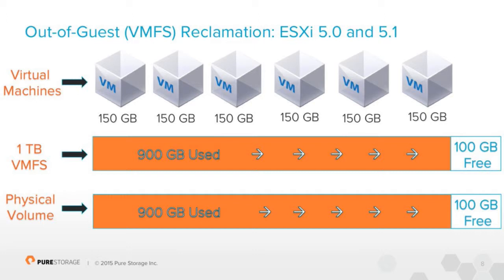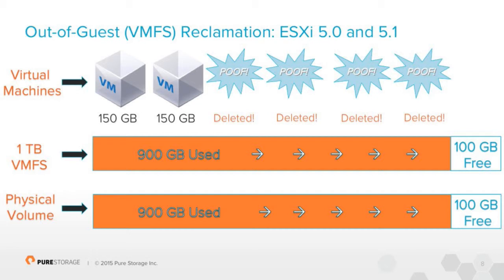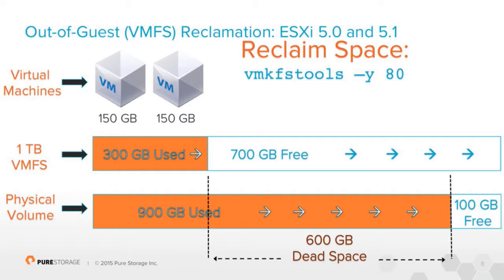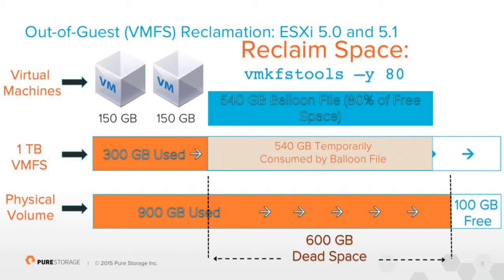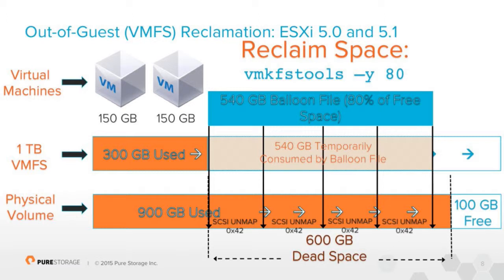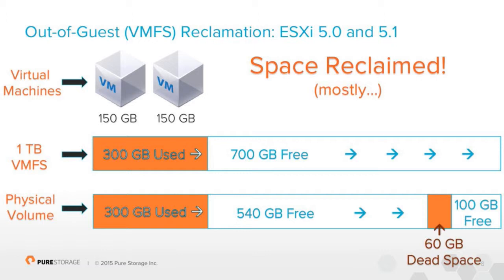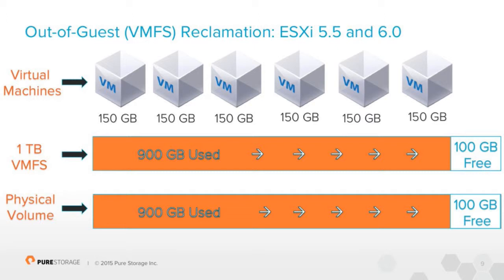So let's look at how UnMap with VMKFS tools works in 5.0 and 5.1. We have a bunch of VMs sitting on a VMFS datastore sitting on a physical volume. We delete a bunch of these VMs and now we have a bunch of dead space on the array. So we run VMKFS tools dash y. The number you supply after dash y is the percentage of free space you want to reclaim — anywhere between 1 to 99. It's going to fill whatever percentage you indicated of that VMFS with a balloon file, then issue SCSI UnMap to that balloon file to reclaim the space. The problem with using a percentage is you're not going to get all the space back. If you had 100% of that free space filled up, you could run out of space — VMs couldn't expand, swap files couldn't be created, you could have SCSI errors. So smaller percentages were used, and efficiency was not great.